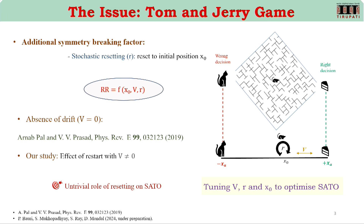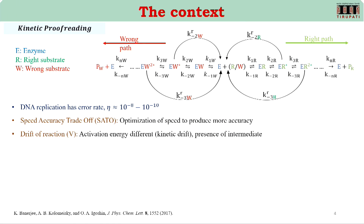Once we introduce stochastic resetting, the reward ratio becomes a function of the initial position X₀, drift V, and resetting rate R. What we find is that by tuning these three parameters we can optimize the SATO, and we want to explore this role.